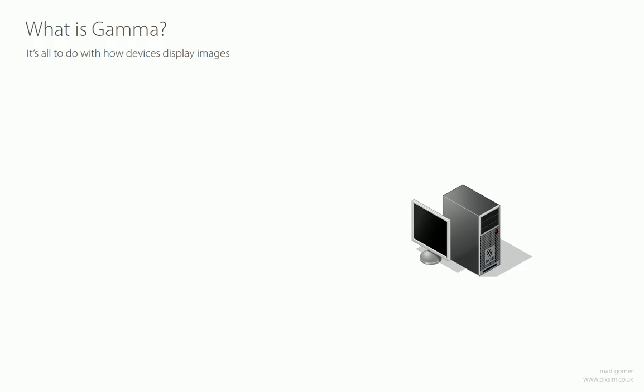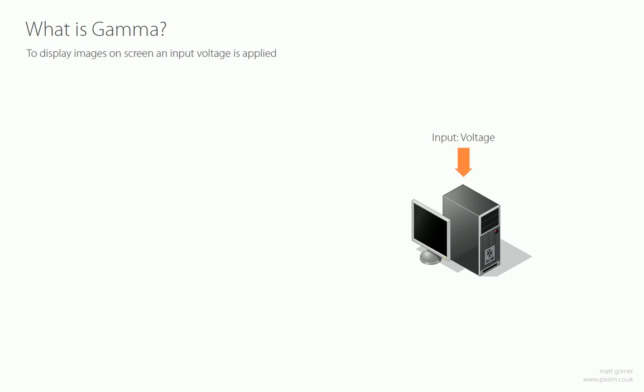It all has to do with how devices display images. This is the start of the story, and it's not limited to computer screens specifically — CRTs, TFTs — it's any electronic device which displays an image essentially. It basically starts with an input voltage: how does a device display an image? Well, an input voltage is applied to the screen, and that translates on your screen as light intensity. As the voltages change, you get dark and light areas — that's how it displays an image.